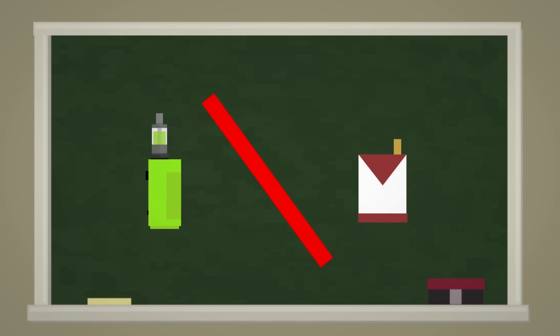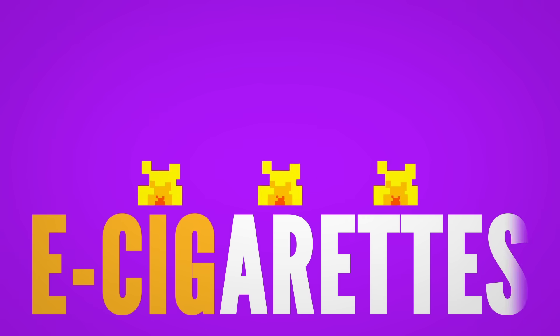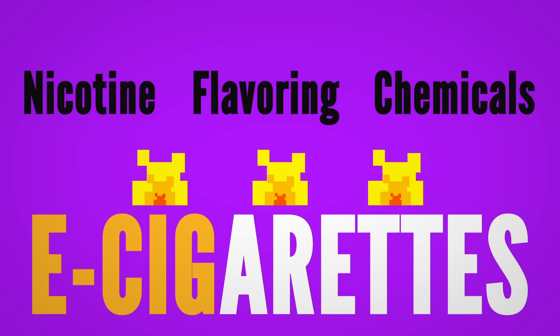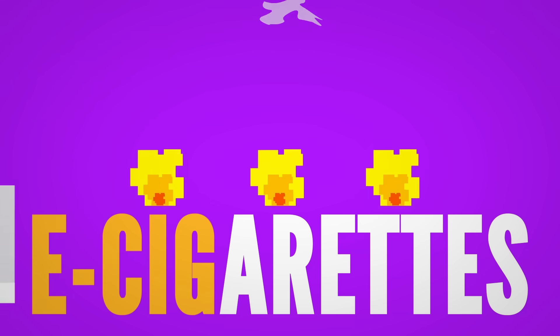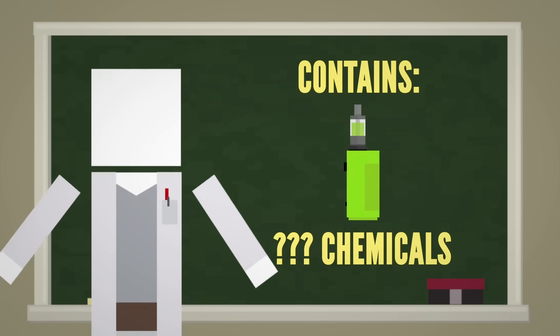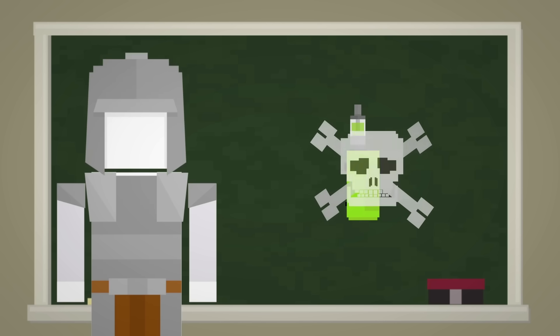Vaping might seem like a safer alternative to smoking, but it's not without its risks. E-cigarettes heat substances like nicotine, flavorings, and chemicals to create an aerosol that you inhale. Unlike regular cigarettes with 7,000 chemicals, sometimes we don't fully know what's in e-cigarettes. But one thing's for sure, they expose you to toxic substances.